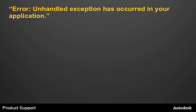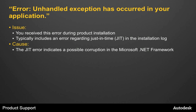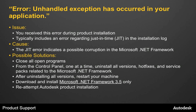Sometimes you'll see a message that says error, unhandled exception has occurred in your application. You usually receive this error during product installation, and it typically refers to a just-in-time or JIT error — the installation log will often include a reference to just-in-time or JIT. A JIT error often indicates a possible corruption in the Microsoft .NET Framework. To address this, close all programs and then from the Control Panel, one at a time, uninstall all versions, hot fixes, and service packs related to the Microsoft .NET Framework. After uninstalling all those versions, restart your machine, then download and install only the Microsoft .NET Framework 3.5. After that installation is complete, you can attempt to reinstall the Autodesk product.